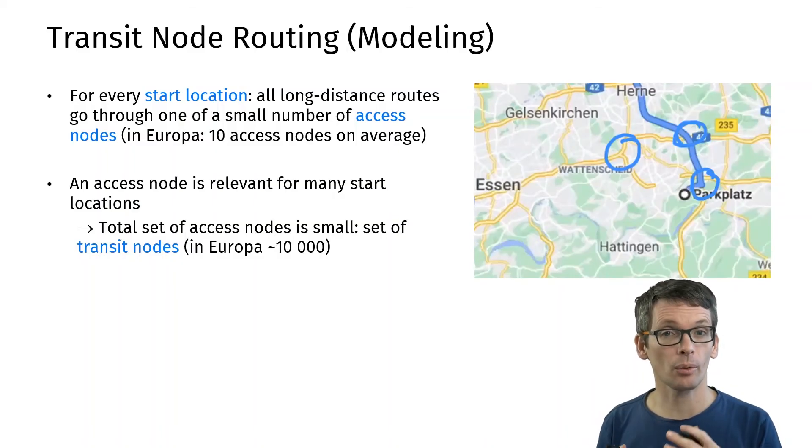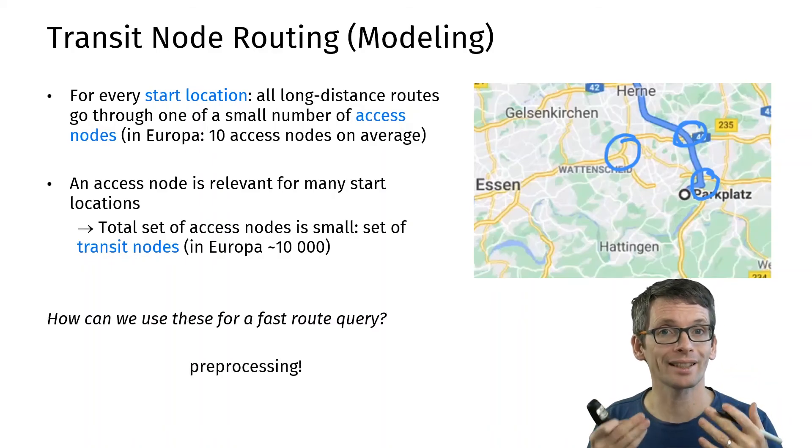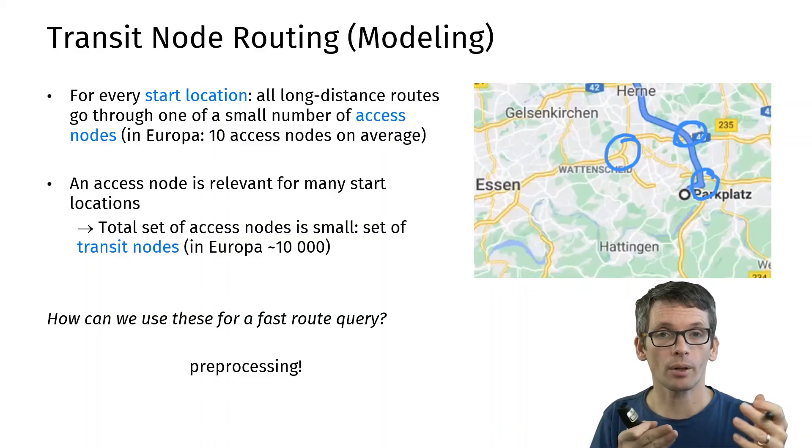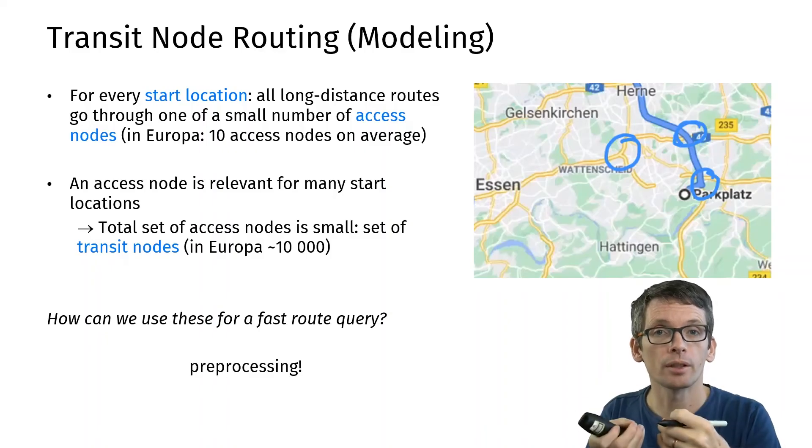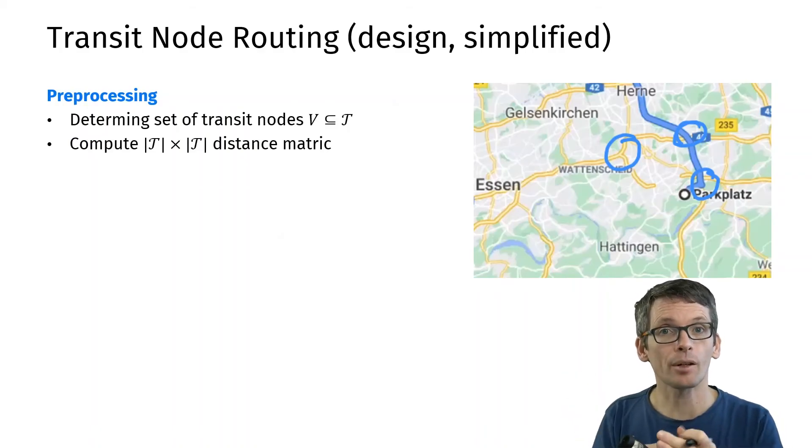But how can we now use the transit nodes for fast route queries? The answer is pre-processing, in particular pre-computing distances. For instance, if I have 10,000 transit nodes, then between any pair of transit nodes I can pre-compute the distance and store that. That's also the first thing that we're going to do. We first need to determine the set of transit nodes and then we pre-compute the distances between transit nodes.